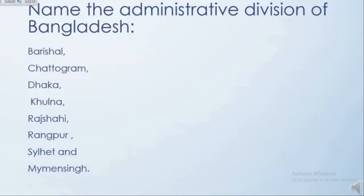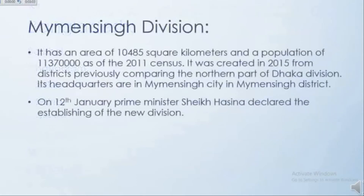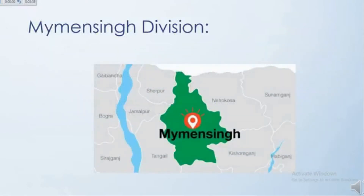Today we are going to discuss about Rajshahi division, Rangpur division, Sylhet division, and Mymensingh division. Let's start. First one is Mymensingh division. It has an area of 10,485 square kilometres and a population of 1,13,70,000. It was created in 2015 from districts previously comprising the northern part of Dhaka division. Its headquarters are in Mymensingh city. On 12th January, Prime Minister of Bangladesh Sheikh Hasina declared the establishment of the new Mymensingh division. This is the map of Mymensingh division.